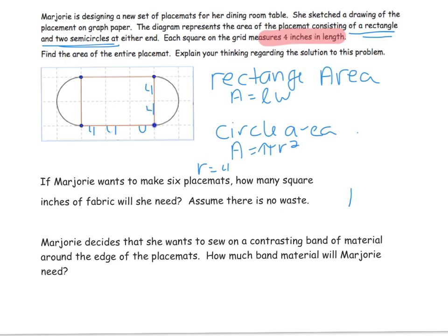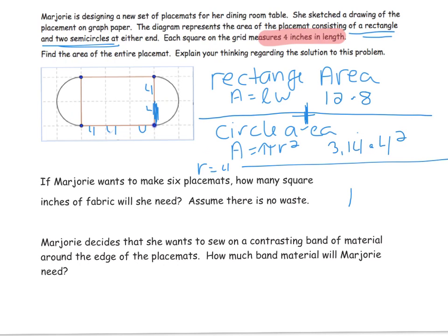The rectangle area is length times width — my length is 4 times 3, which is 12, wait, my width is 8. For the area of the circle I'm going to use 3.14 times the radius, which is 4, squared. So now I just need to plug it into the calculator and add them together to get my total area.